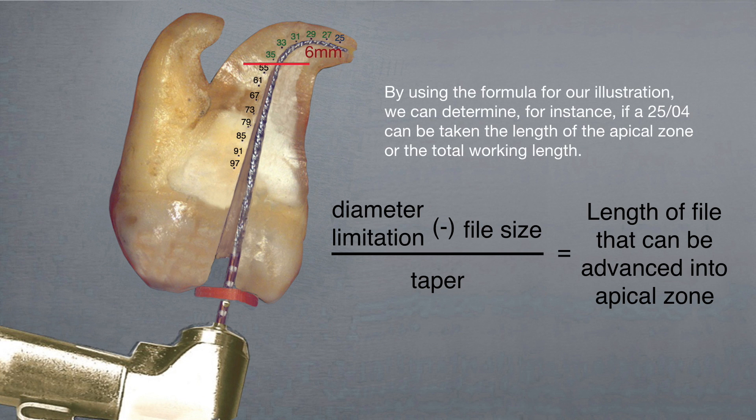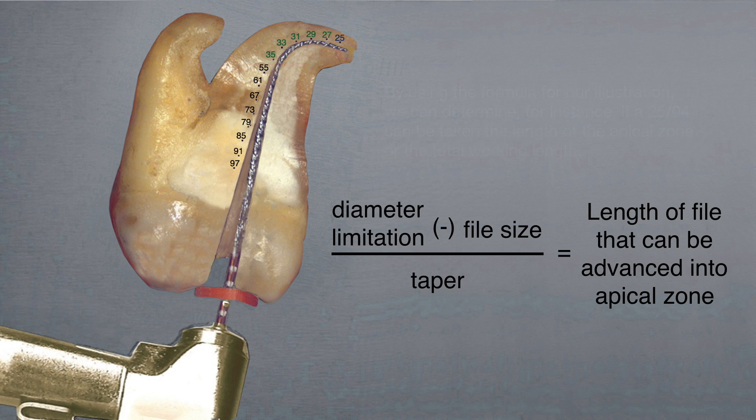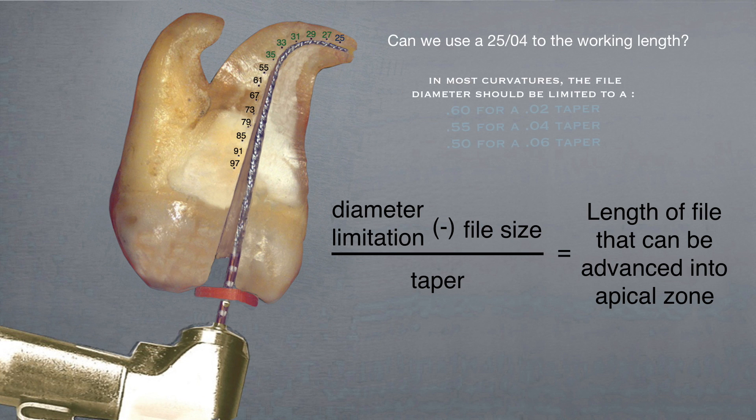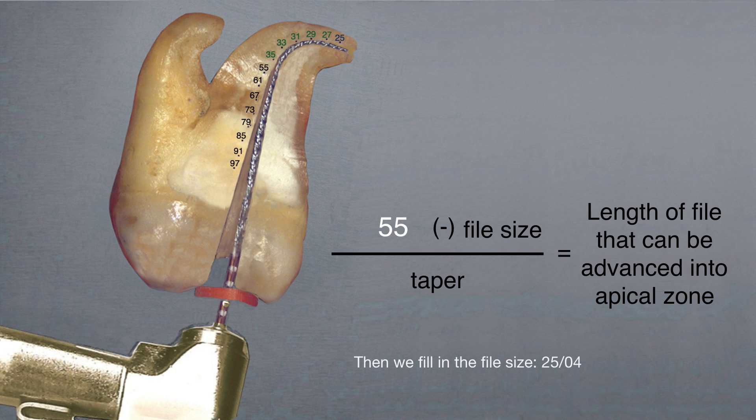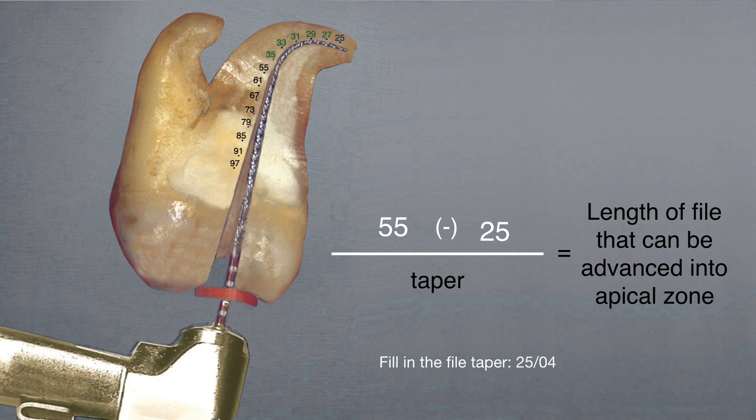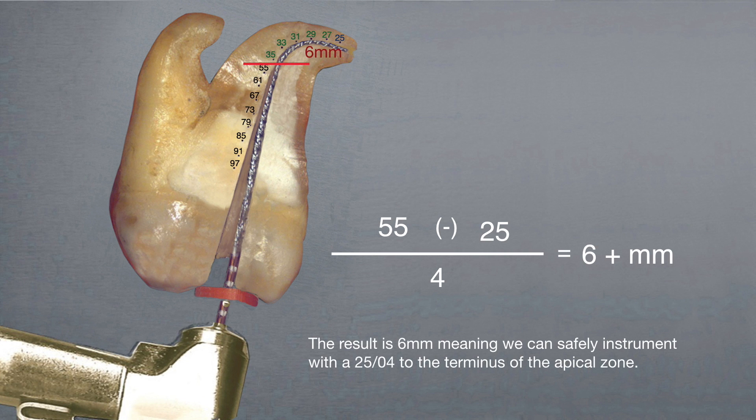By using the formula for our illustration, we can determine, for instance, if a 2504 can be taken to the length of the apical zone or through the total working length. So, can we use a 2504? For the 25 with an 04 taper, we see the diameter limitation is 55. Next, we'll reference our file size, which is 25. And then the taper, which is 04. So, 55 minus 25 divided by 4 equals 6, meaning we can safely instrument with a 2504 to the terminus of the apical zone.